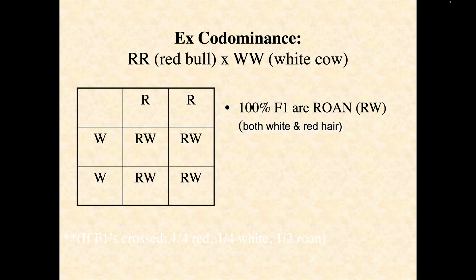A codominance example would be with cattle. If you've got a dominant colored bull and a white cow, you can end up with roan cattle, meaning both white and red hairs are distributed throughout and produce the roan color. In cases of codominance, your alleles are both capital letters. If you cross the F1s, you would start to see red, white, and roan being expressed in the F2 generation.